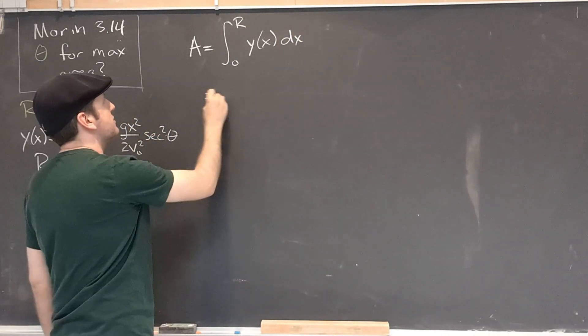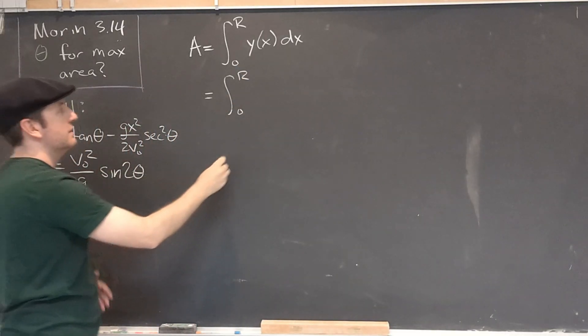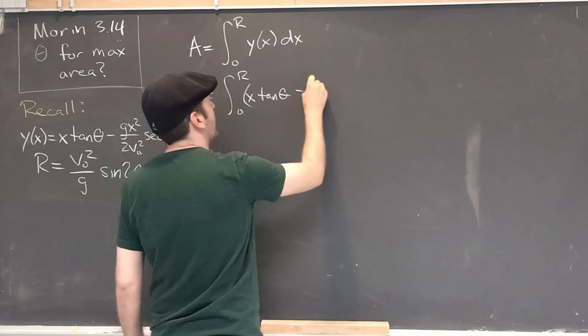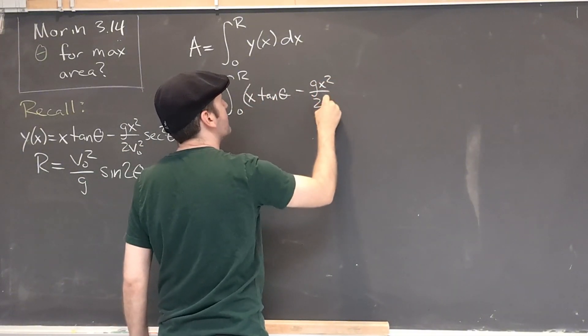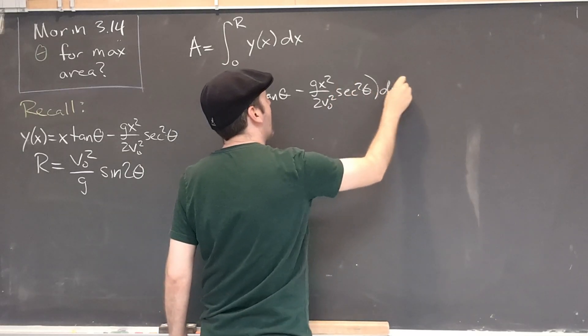So this will be the integral from 0 to R of our trajectory function: x tan θ minus g x squared over 2v₀ squared secant squared θ dx. Notice that θ and v₀ and g are all constants here.